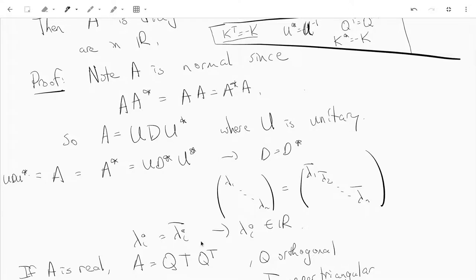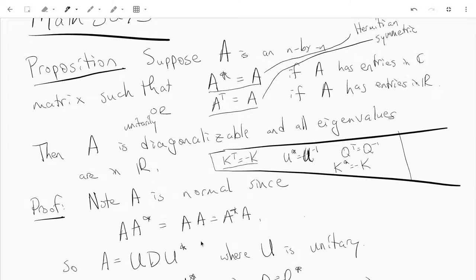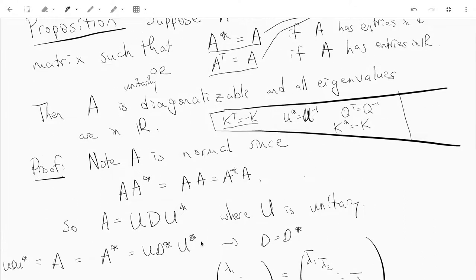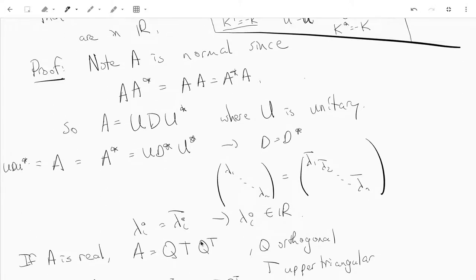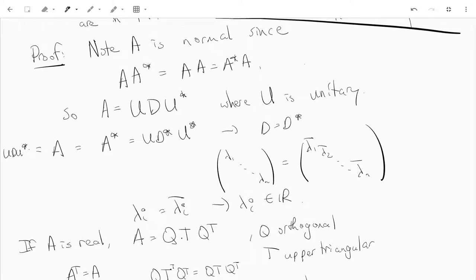In the Hermitian complex case, we're done: A is unitarily diagonalizable with all real eigenvalues. For a real symmetric matrix, we're almost done. Since all eigenvalues are real, our theorem tells us there exists an upper triangular matrix T and orthogonal matrix Q such that A equals QTQ transpose, where the diagonal entries of T are the real eigenvalues of A.